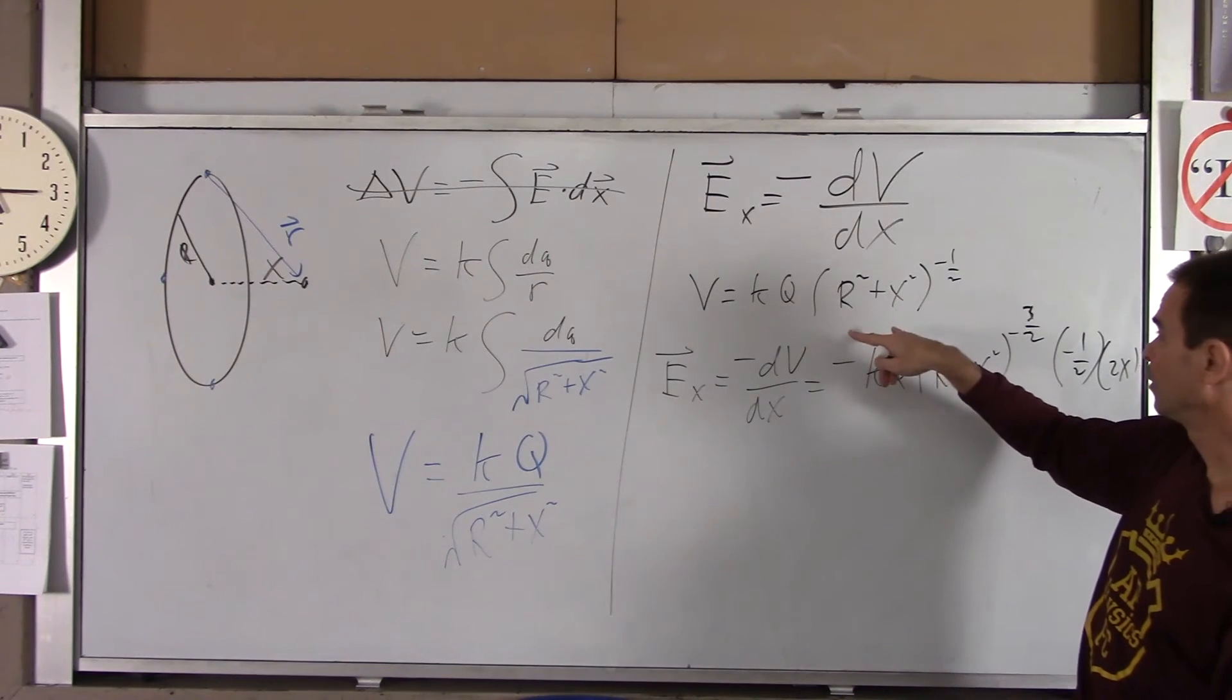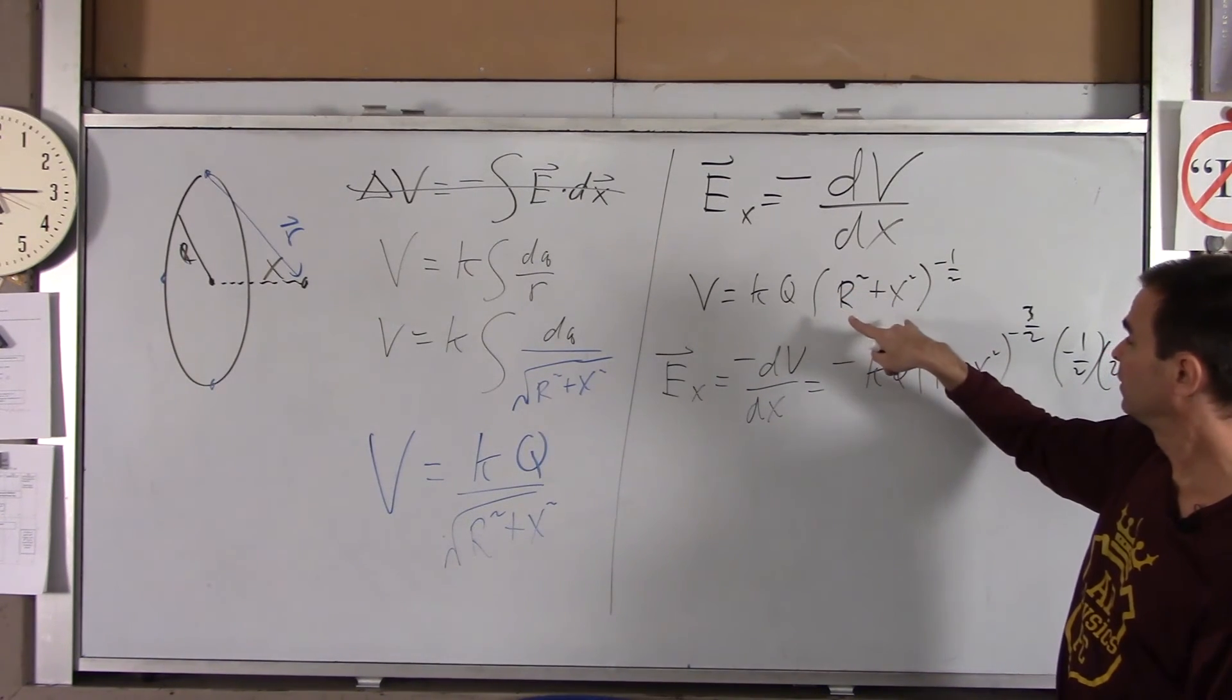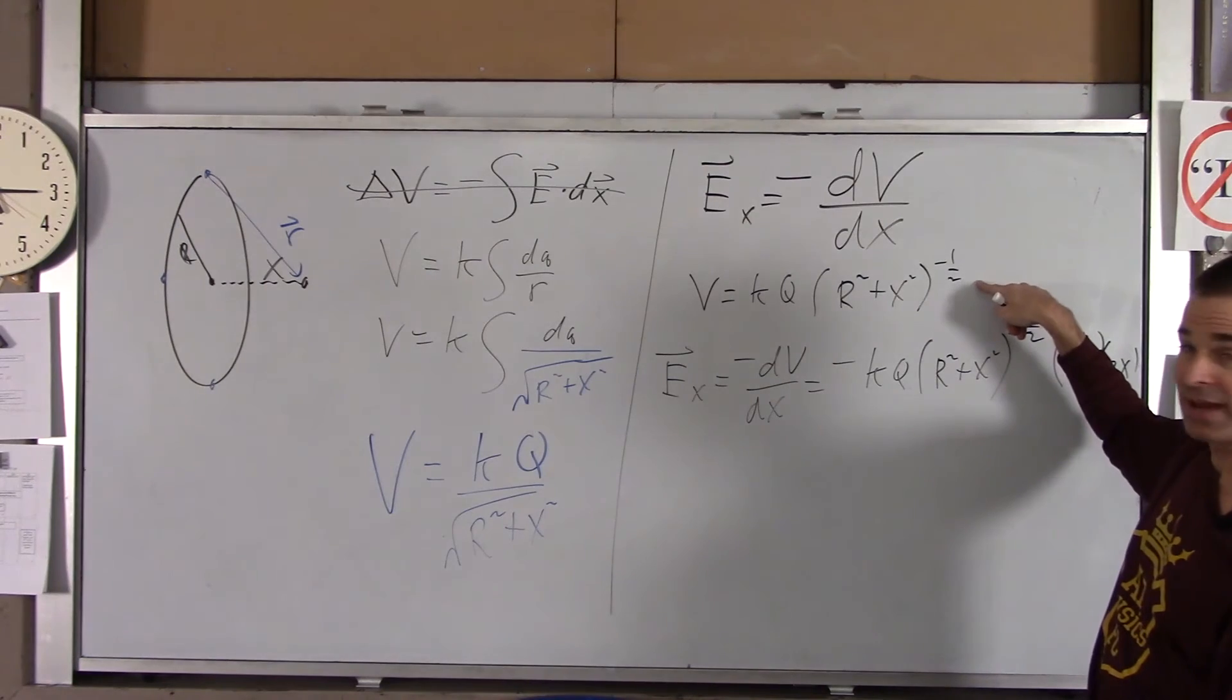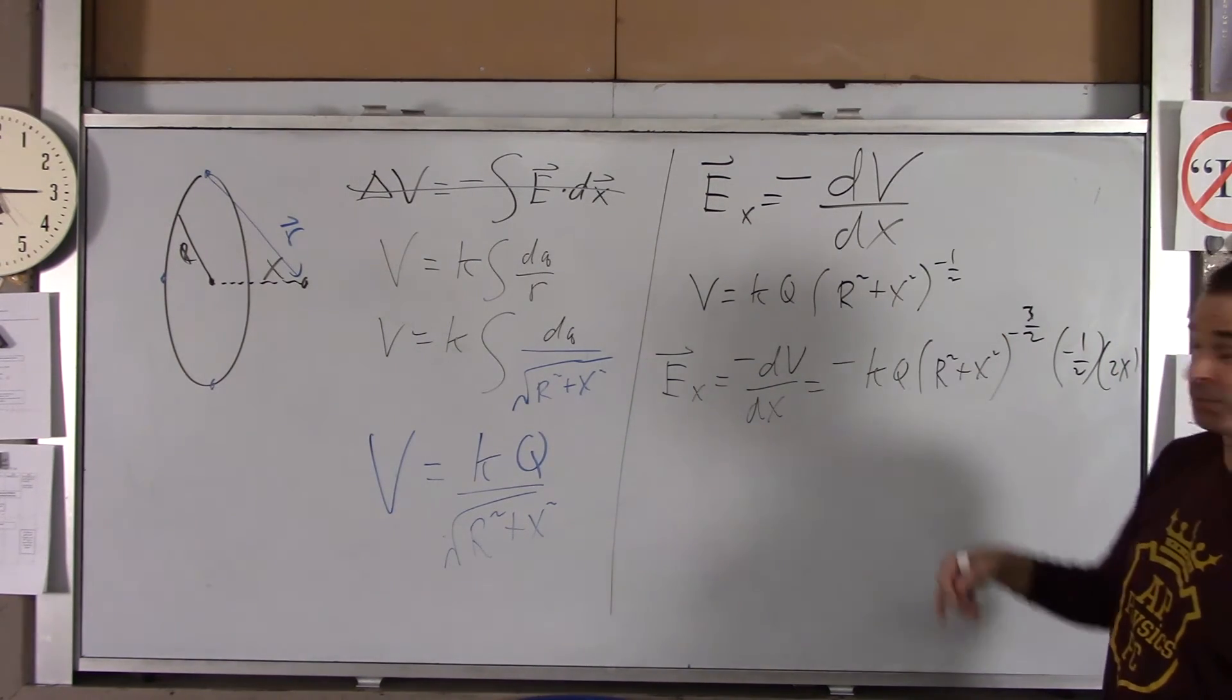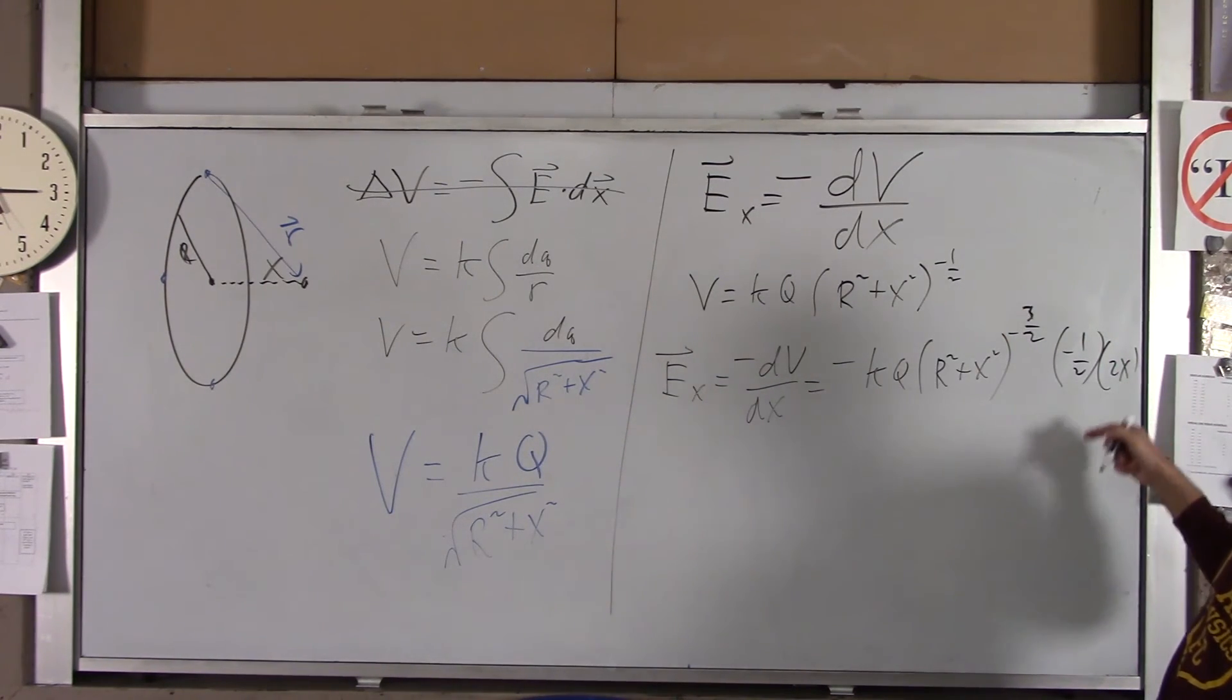So, you do the power rule. You take negative a half times this, the negative three-halves times the derivative of the inside, which is 2X. The half and the two drop out.